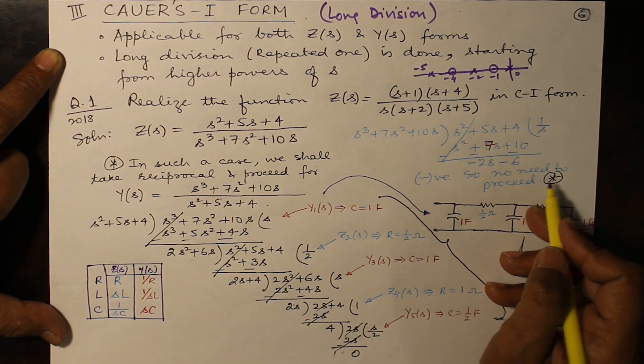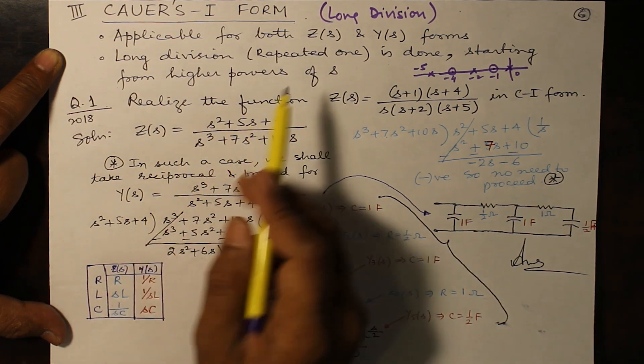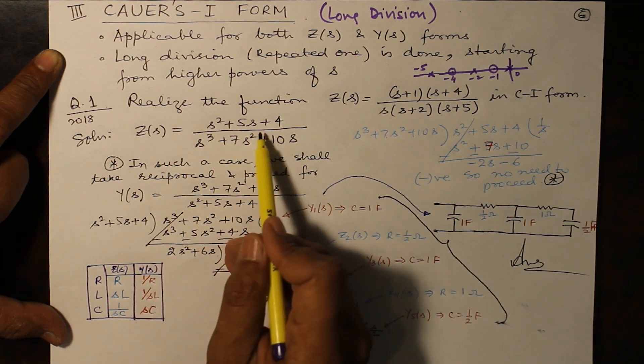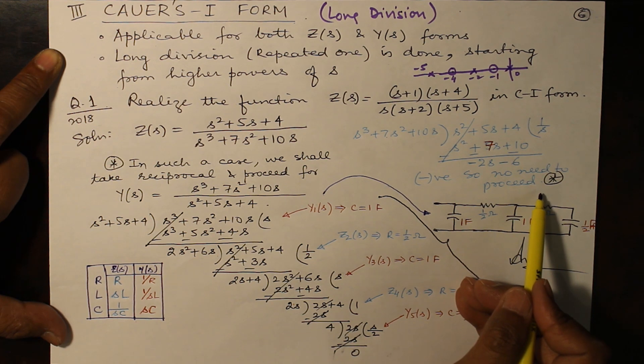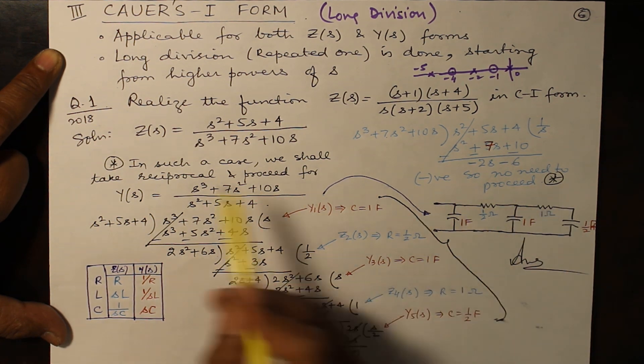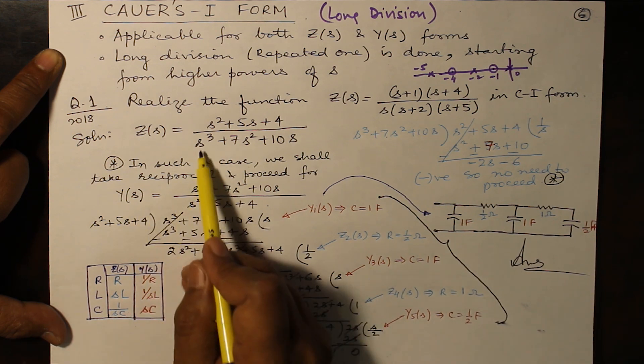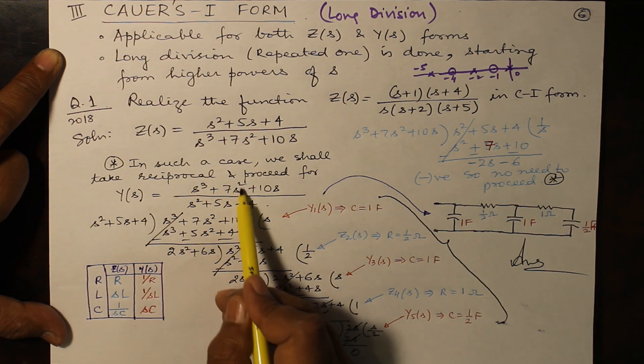But this step is necessary to be shown even in examination. Now in such a case we shall take the reciprocal. As I told you, it is applicable both for Z(s) and Y(s). So if a question is given in Z(s) and you are not in a position to attain a network for Z(s), what you will do is take the reciprocal and proceed with Y(s). So Y(s) equals the reciprocal of this impedance function: s³ + 7s² + 10s over s² + 5s + 4.